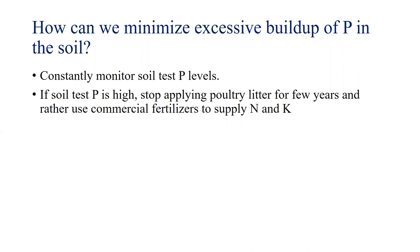A common question is: how can we minimize excessive phosphorus buildup? The answer is to constantly monitor your soil test phosphorus levels — that's the only way to know whether you're entering the danger zone. If soil test levels are really high for phosphorus, it's a good idea to stop applying litter for a few years and meet nitrogen and potassium demands using commercial fertilizer. Alternatively, you can rotate between commercial fertilizer and poultry litter to reduce the risk of phosphorus loss into the environment.